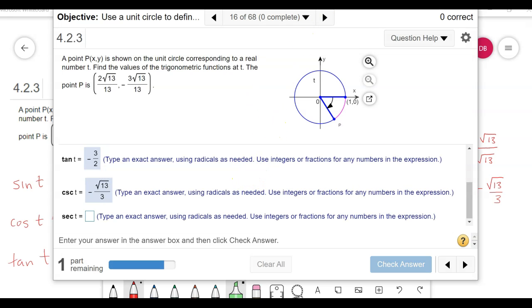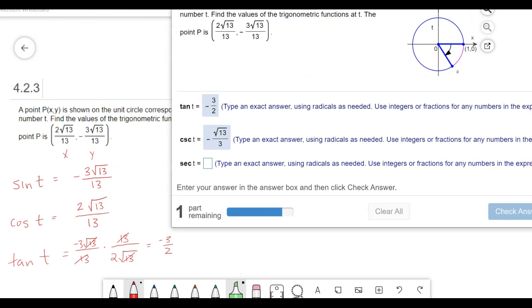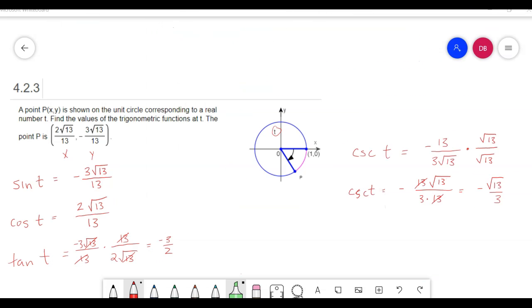Now they want the secant. That's just the reciprocal of the cosine. I'm going to take the cosine function and do the same thing that I did with the sine for the cosecant. For secant, I'll do it over here to give me some room. That's going to be the reciprocal of this—I have 13 on the top and 2 times the square root of 13 on the bottom. I'm going to do the exact same thing I did here. I'm going to put a square root of 13 on the top and the bottom.